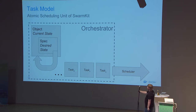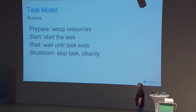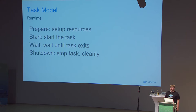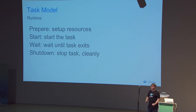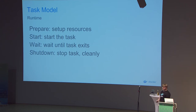These tasks will be sent out to the scheduler and dispatched to various nodes. A task is just an execution model: prepare a task — which means pulling an image classically — then start a task, wait on a task, and shut it down. Each of these methods corresponds with a task state. If wait is blocking, you're considered in the running state.